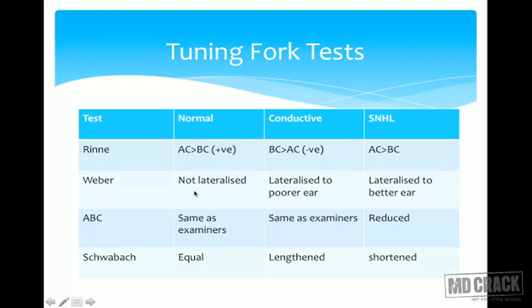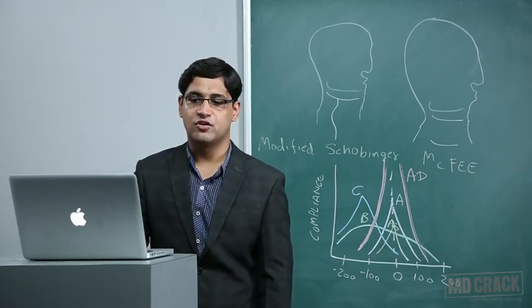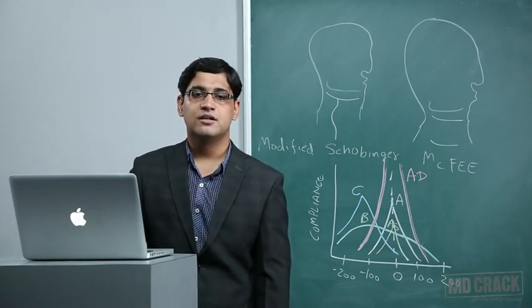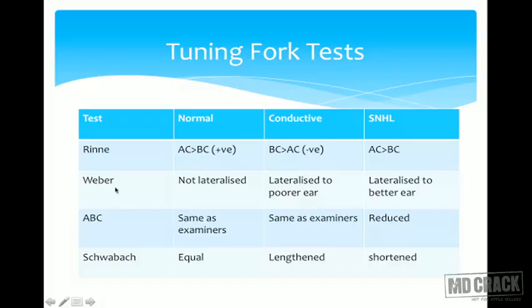The absolute bone conduction (ABC) test measures cochlear function. Note: air conduction measures both conductive and cochlear apparatus, while bone conduction measures cochlear function only. In ABC, a normal individual hears for the same duration as the examiner; ABC time is reduced in sensorineural hearing loss. In conductive loss, ABC time is normal (same as examiner). The Schwabach test: normal in normal individuals, lengthened in conductive hearing loss, and shortened in sensorineural hearing loss.